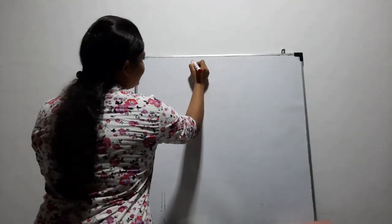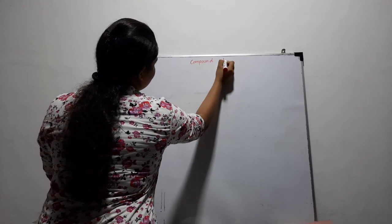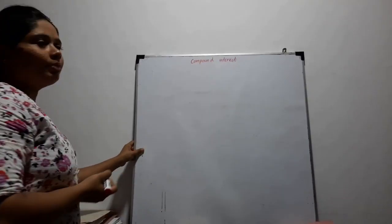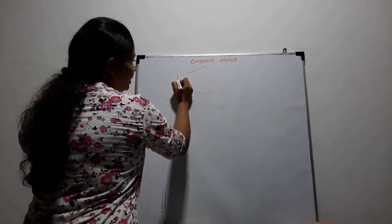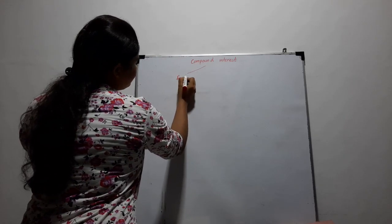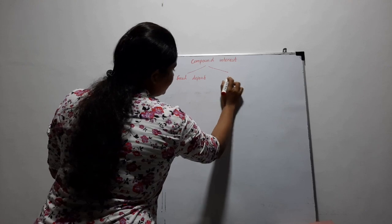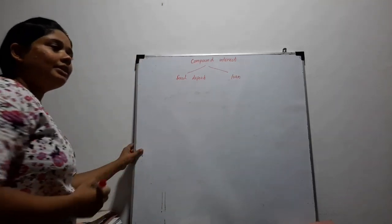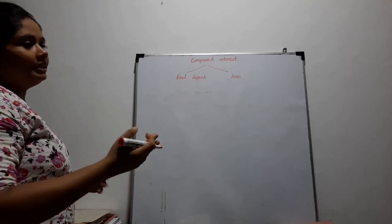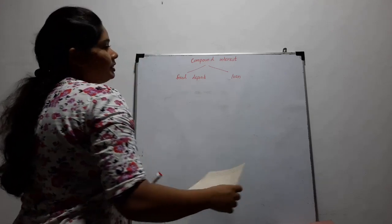This is not a difficult part, unlike the interest on reducing balance. Now let's see what compound interest is. Where do we need compound interest? When we deposit amounts as fixed deposit, or when we borrow loans from the bank. Compound interest means calculating the interest on the interest. Now let's learn this by solving a problem.